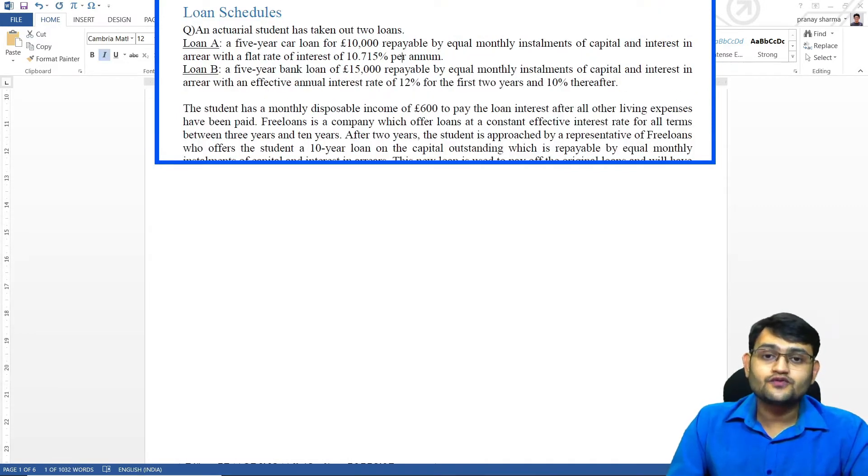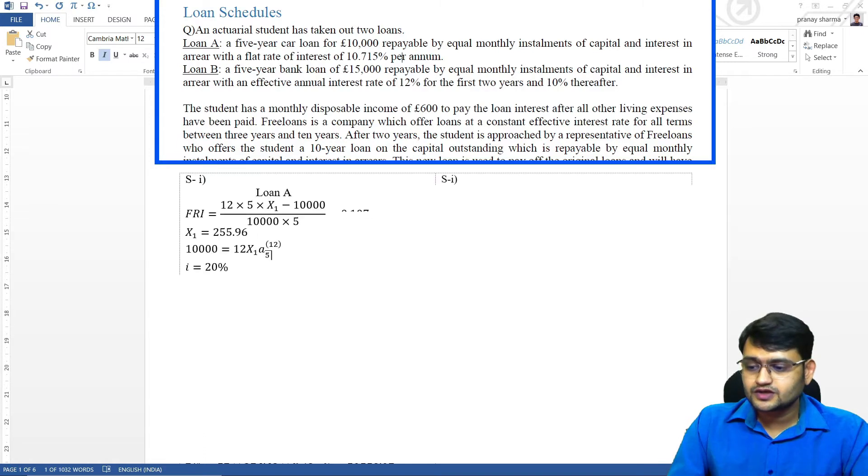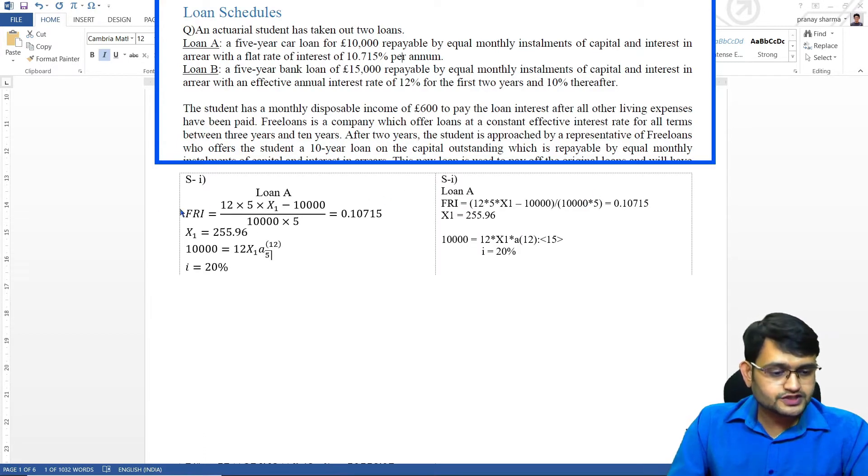For both loans we have to find the monthly repayment. In loan A we'll be using flat rate of interest formula. So for loan A you can see here I have solved it in two types: using equation editor and without using equation editor. We have our flat rate of interest formula. We get our flat rate of interest is 10.715.